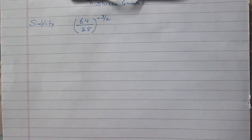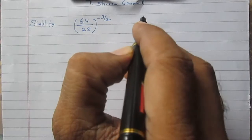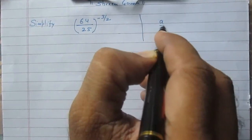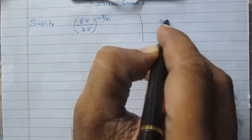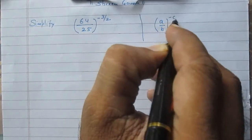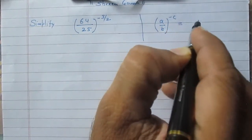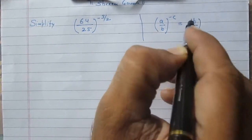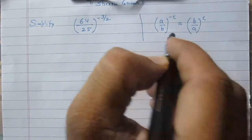Simplify 64 divided by 25, raised to the power minus 3 by 2. According to the laws of exponents, we know that a upon b raised to the power minus c is equal to b upon a raised to the power c.